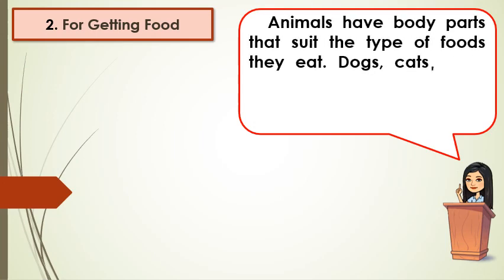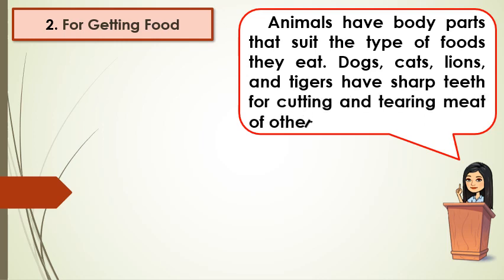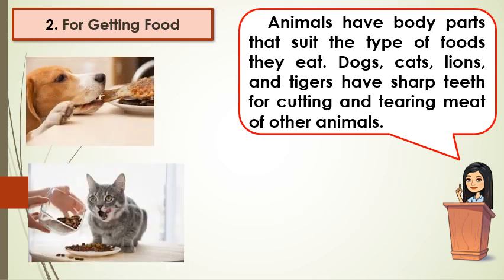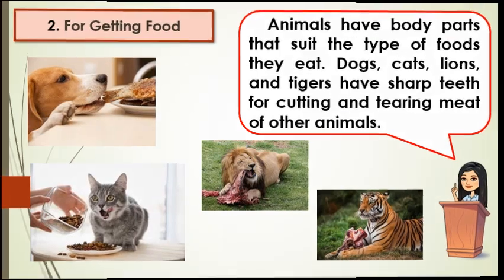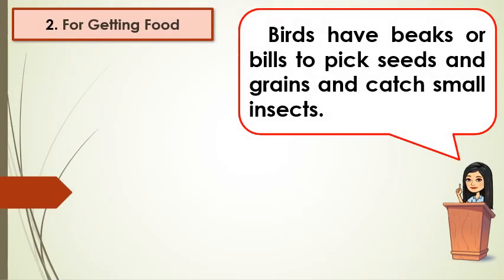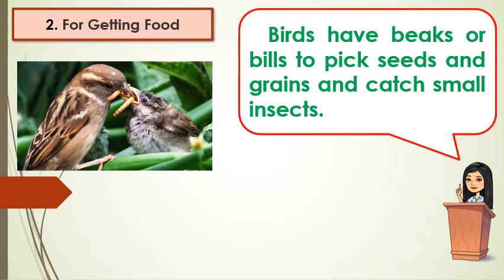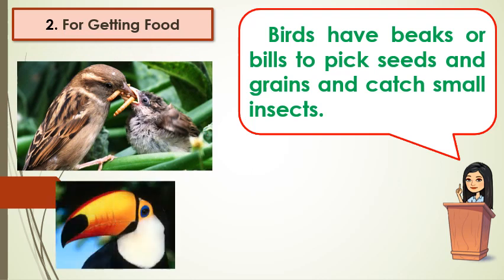Now, let's discuss the body parts of animals that they use in getting their food. Animals have body parts that suit the type of food they eat. Dogs, cats, lions, and tigers have short teeth for cutting and tearing the meat of other animals. On the other hand, birds have beaks to pick seeds and grains and catch small insects.